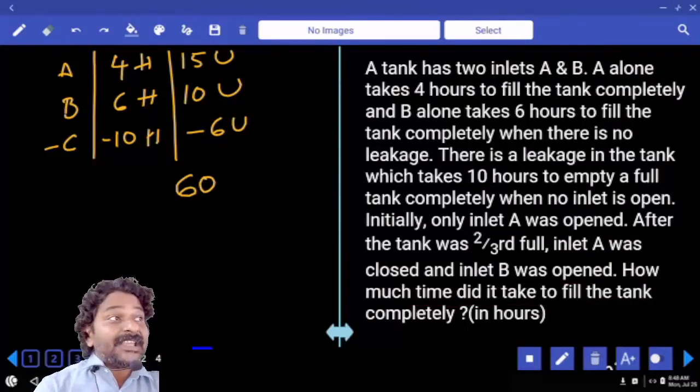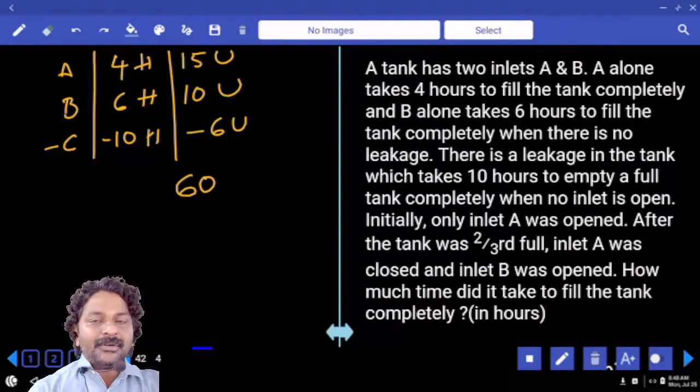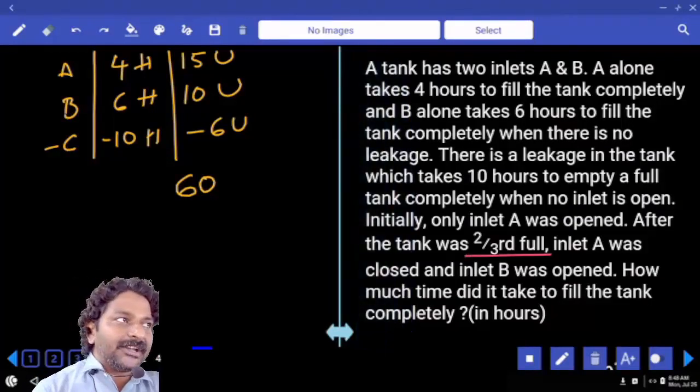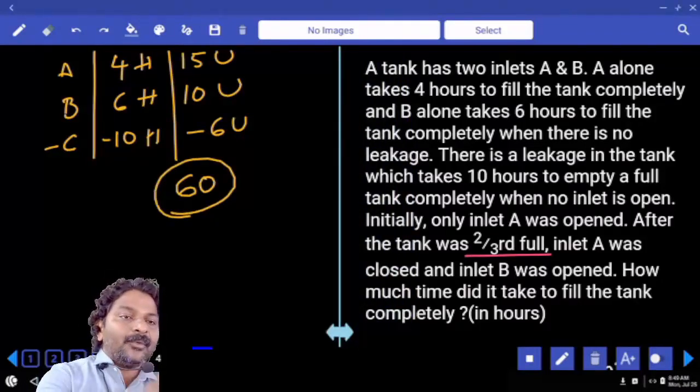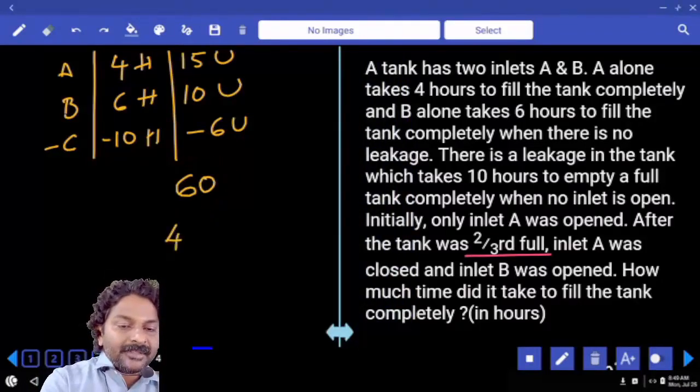Now first inlet A is opened. There is a leakage in the tank. So both together fill the tank for two-thirds of the capacity. What is the total capacity? What is two-thirds of it?